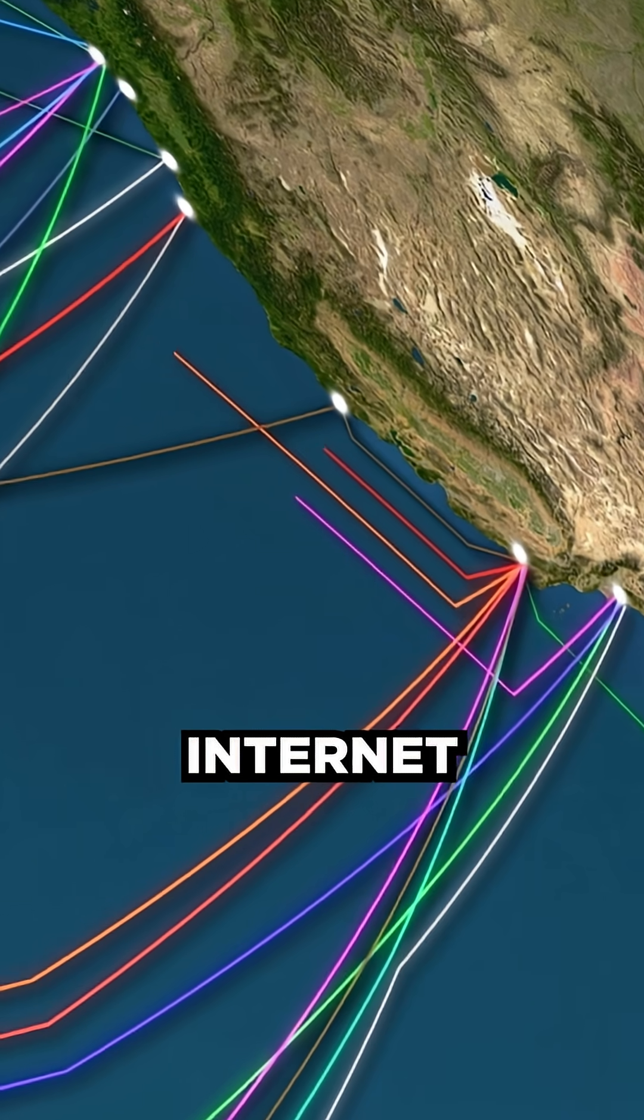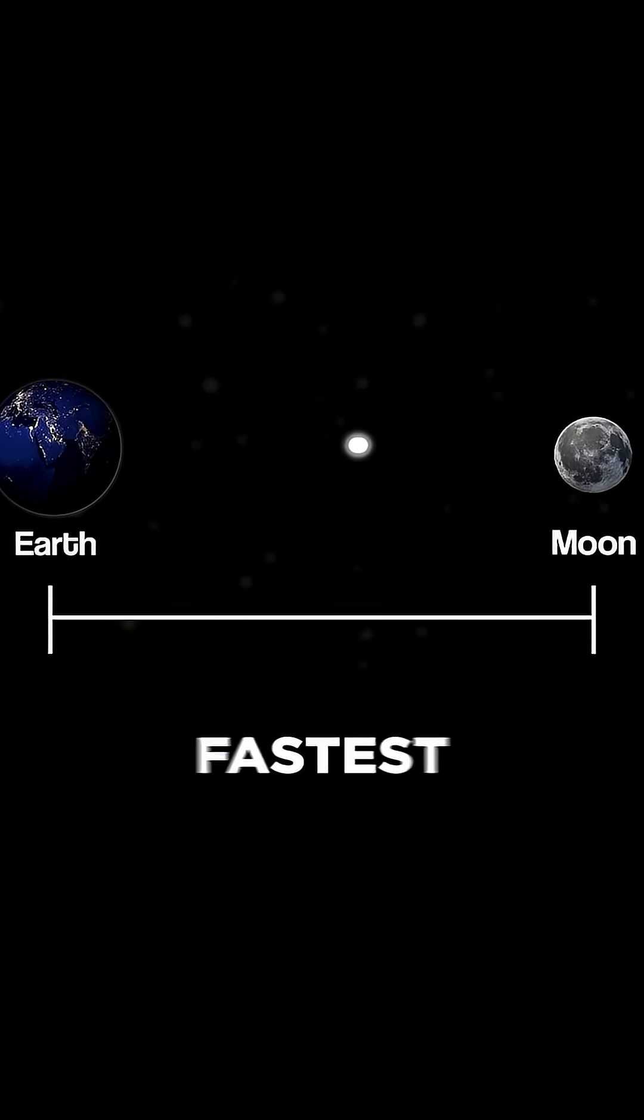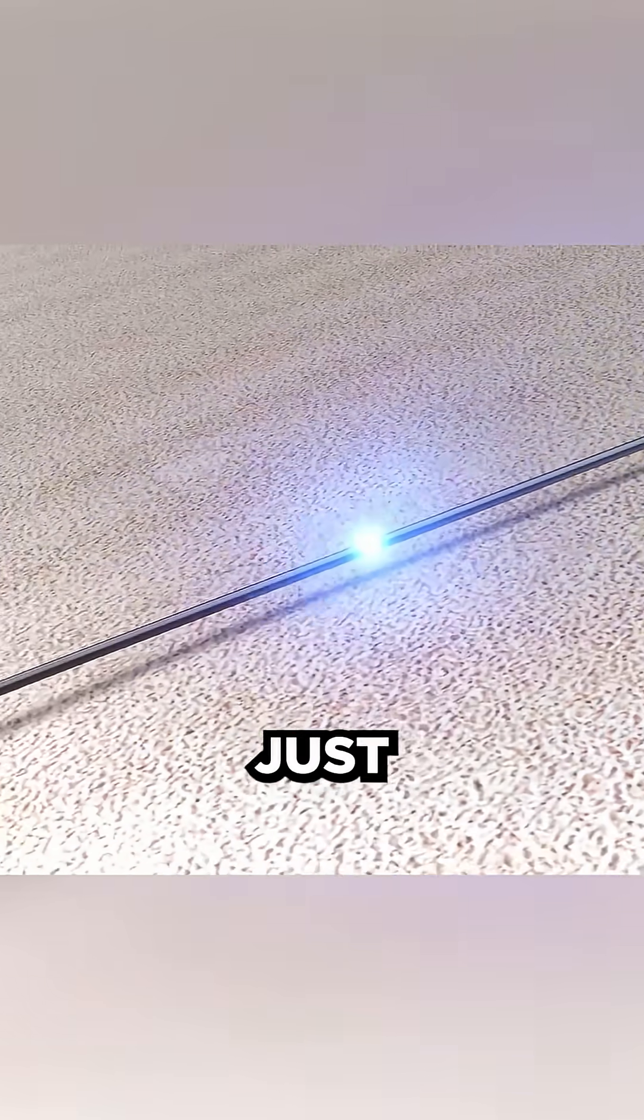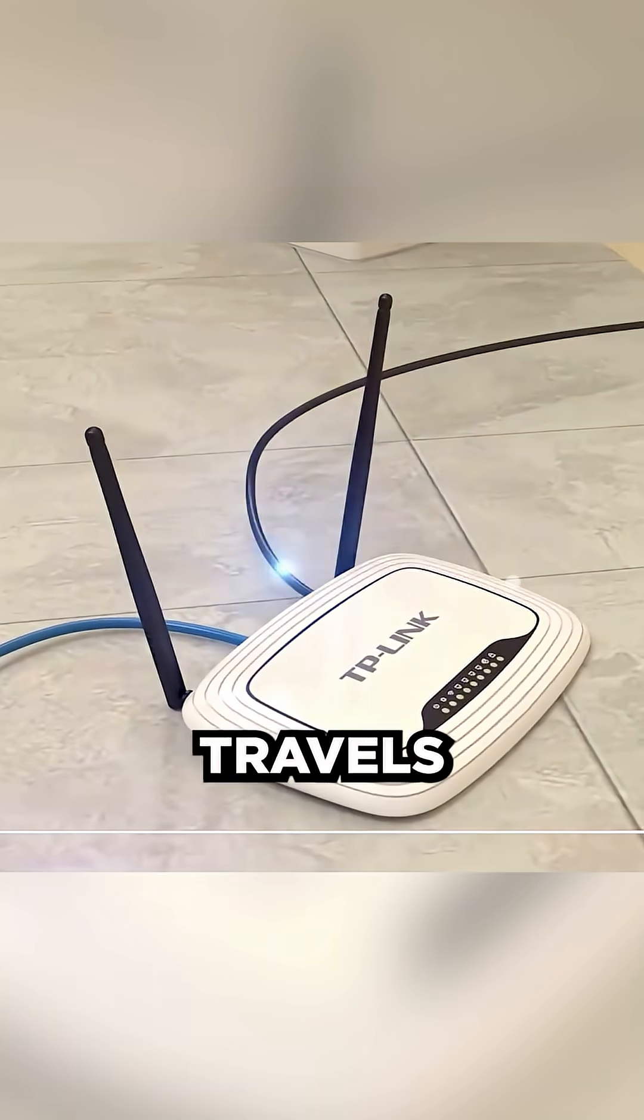How does the fiber technology that powers the internet actually work? Take the speed of light, the fastest thing in the universe, and slow it down just a bit. That's the speed at which data travels across the internet.